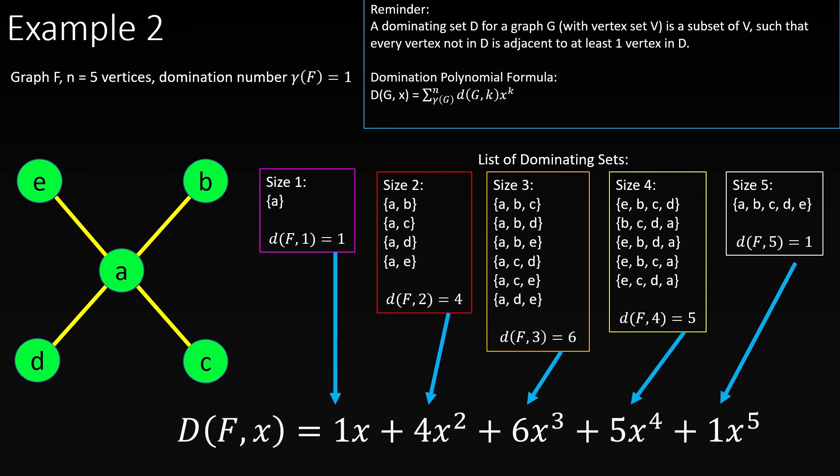There's an interesting, almost binomial pattern to these coefficients because our graph is a star graph. I encourage you to think about where this pattern comes from and find the general form of the domination polynomial of a star graph with any number of vertices, then post it in the comments.